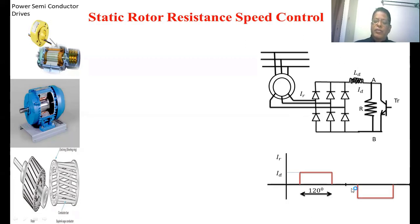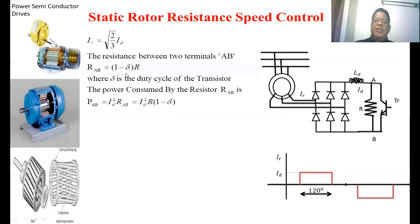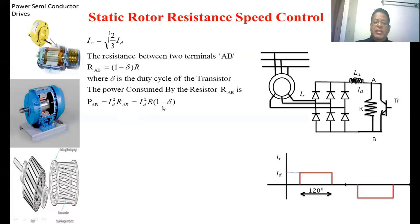Now we are going to find out the effective resistance which is added into the rotor. This is the source current waveform — the current available at this point. During 180 degrees, the source current consists of only 140 degrees. If we find the RMS value for the source current, then IR equals root(2/3) times ID, where ID is the DC link current. The average resistance between terminals A and B becomes RAB equal to (1 minus delta) times R, where delta is the duty cycle. The power consumed by resistance RAB, denoted PAB, is equal to ID squared times RAB, which in substituted form is ID squared times R times (1 minus delta).